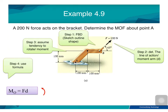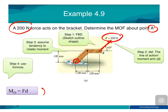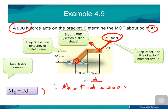Next, we solve example 4.9 using the principle of moment. A 200 N force acts on a bracket; determine the moment about point A. Method 1: the moment about point A equals force times perpendicular distance D. The force is 200 N and we need to find D, the perpendicular distance to the force. The distance given is 100 mm, which we must convert to meters since the unit of moment is Newton·meter.